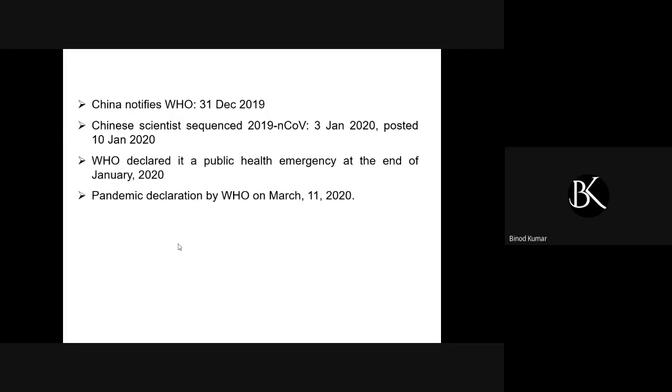Just after the Chinese scientists revealed the sequence of the coronavirus online, the whole world knew that there was a new virus outbreak in China. Scientists would have been aware that this kind of virus outbreak doesn't stay within a country and very soon it can spread to other countries. Probably it was not taken very seriously at that time, and that's the reason many countries suffered a lot.